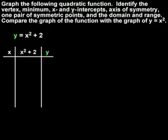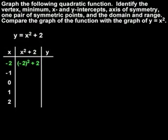For the values of x, let's use negative 2, negative 1, 0, 1, and 2. If we plug negative 2 into our function for x, we have negative 2 squared plus 2, or positive 4 plus 2, which is 6. If we plug negative 1 in for x, we have negative 1 squared plus 2, or positive 1 plus 2, which is 3.